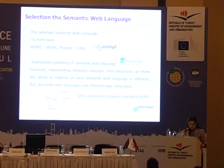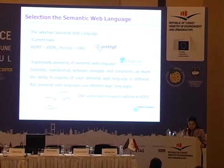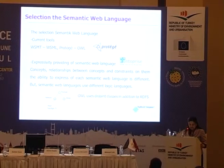For example, female is a subclass of human, and male is a subclass of human. OWL adds disjoint classes in addition to RDFS, so female can be declared a disjoint class from male.